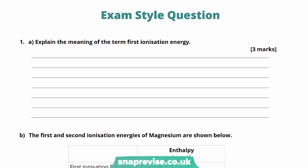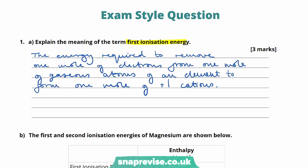Exam question 1a: Explain the meaning of the term first ionization energy. The first ionization energy is the energy required to remove one mole of electrons from one mole of gaseous atoms of an element, giving one mole of 1+ cations. One mark for removing one mole of electrons, one for removing from one mole of gaseous atoms, and one for forming one mole of 1+ cations.